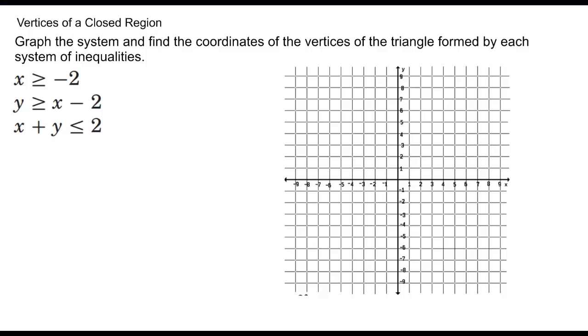Next, we're going to talk about vertices of a closed region. In order to do that, we've got to first graph these equations. The only one that's not in slope-intercept form is the last one. So y less than or equal to negative x plus 2. Let's look at what happens when I graph this. Here's x greater than or equal to negative 2. That's a vertical line at negative 2.